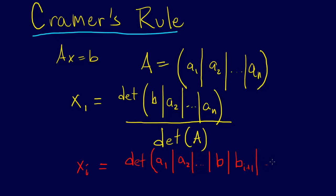And then we say all the way to, excuse me, that would be A_i+1, all the way to A_N. And so divided by the determinant of A.